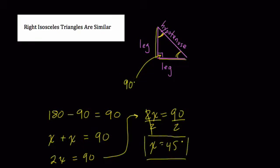What does this mean? Well, the idea now is that in every right isosceles triangle, we have a 90 degree angle and two 45 degree angles. So by the angle, angle, angle postulate, all right isosceles triangles are always similar.